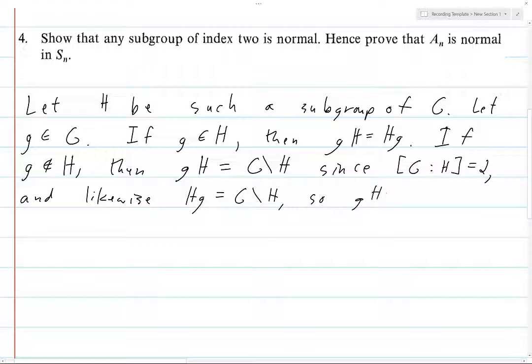And so gH equals Hg. Thus, gH equals Hg for all g in G. Or equivalently, H is normal in G. So there we go.